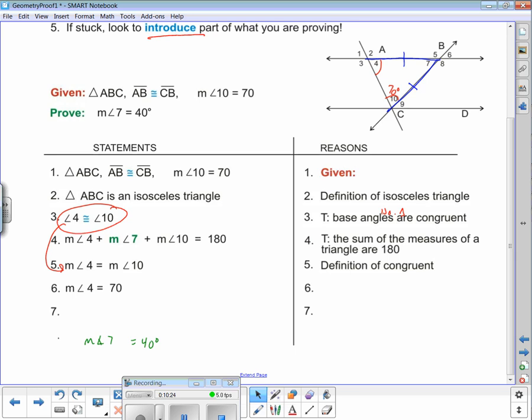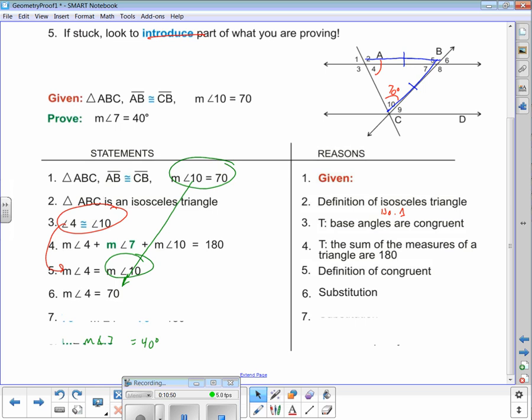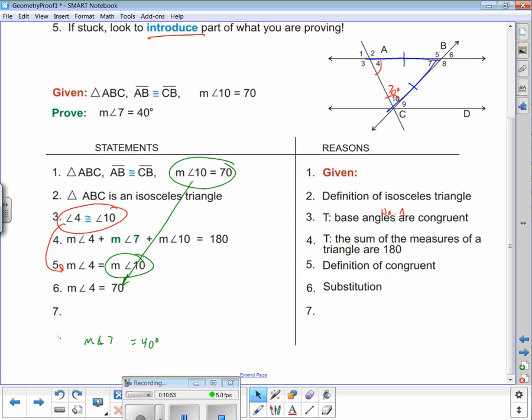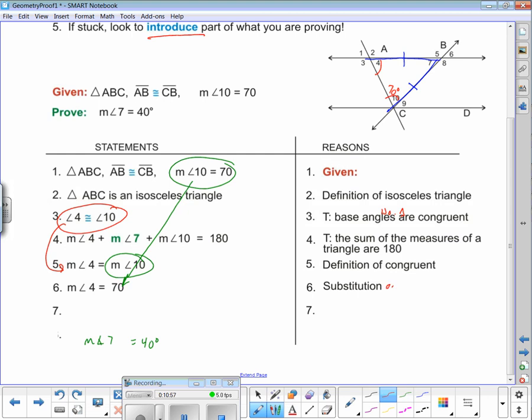What's my next step? My next step is the measure of angle 4 equals 70. How did I do that? Where did that come from? 10 is 70. I substituted in 70 for the 10. You can call that two different things. I allowed my students that sometimes you could call that substitution. You could actually call that transitive as well. If A equals B and B equals C, then A equals C - transitive.